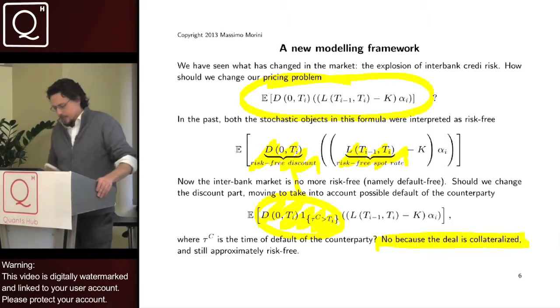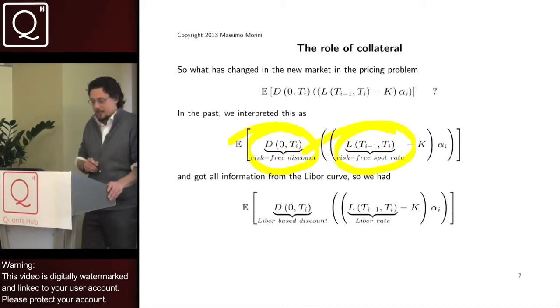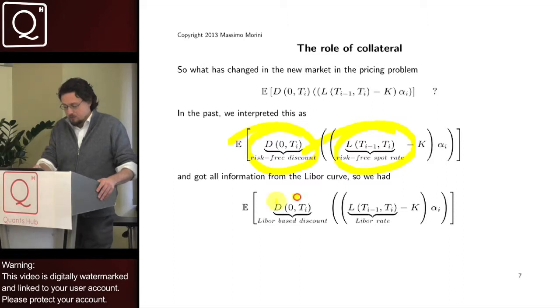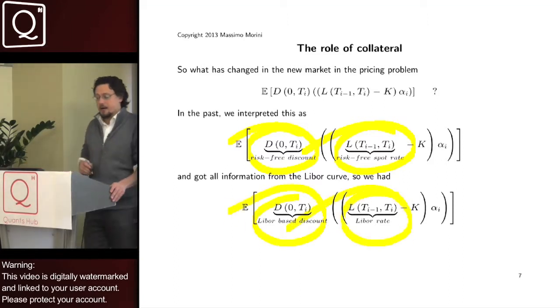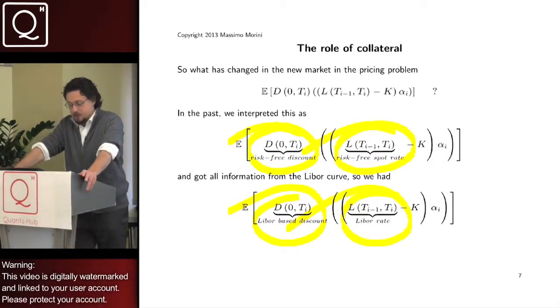So, what has really changed in our pricing problem? Remember, as long as we interpreted both discount and the underlying as risk-free rates, and we considered the LIBOR curve our risk-free curve, we got both information about the underlying from the LIBOR curve.